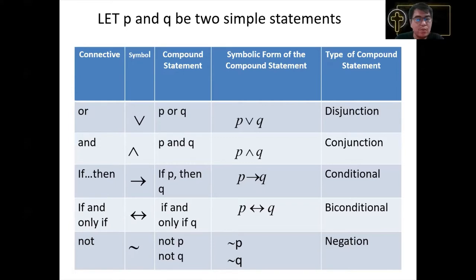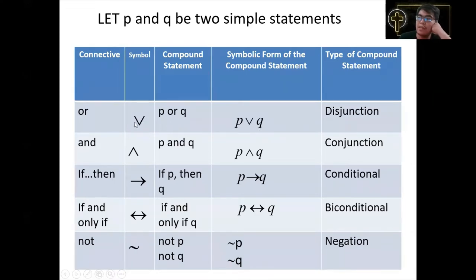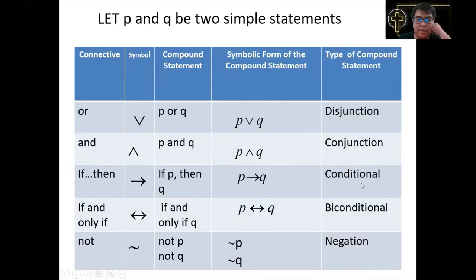The first connector we can use to combine simple statements is OR, symbolized by ∨, read as 'P or Q' — this type of compound statement is called the disjunction. Another connector is AND, symbolized by ∧, read as 'P and Q' — this is called the conjunction. Another connective is IF-THEN, symbolized by an arrow →, read as 'If P then Q,' which is labeled as a conditional compound statement.